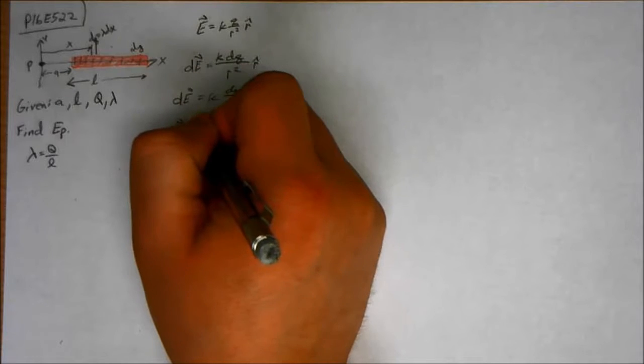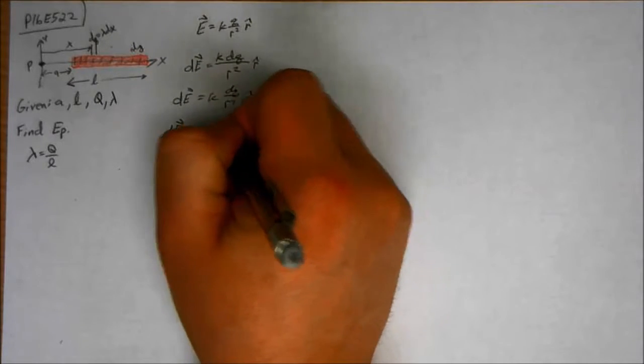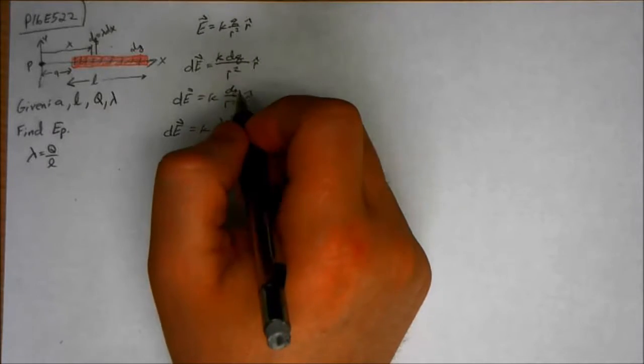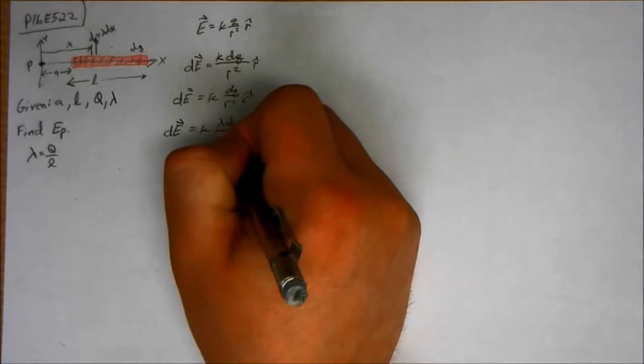So DE is equal to K lambda dx over R, which is now the distance to that charge element, x squared.